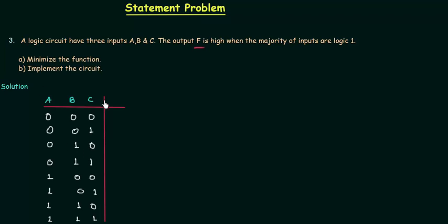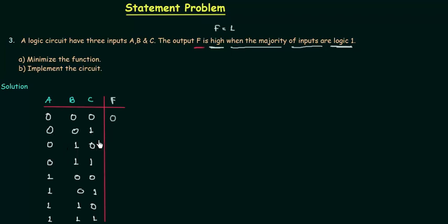We will use the problem statement to find the function f. The output f is equal to 1 when the majority of inputs are logic 1. We have three inputs, and if the majority are 1, we take f as 1. For the first case, all three inputs are 0, so f is 0. For cases with two 0s and one 1, f is again 0. For the fourth case, b is 1 and c is 1, so f is 1. For the fifth case, f is 0, and for the last three cases, f is 1.